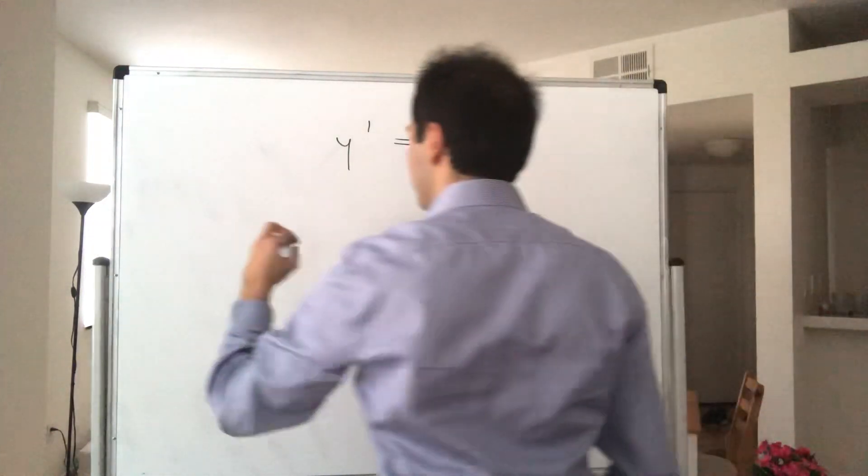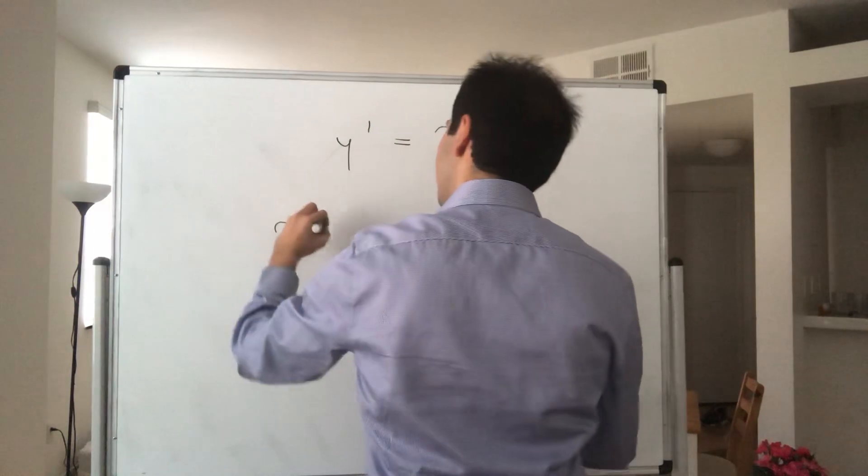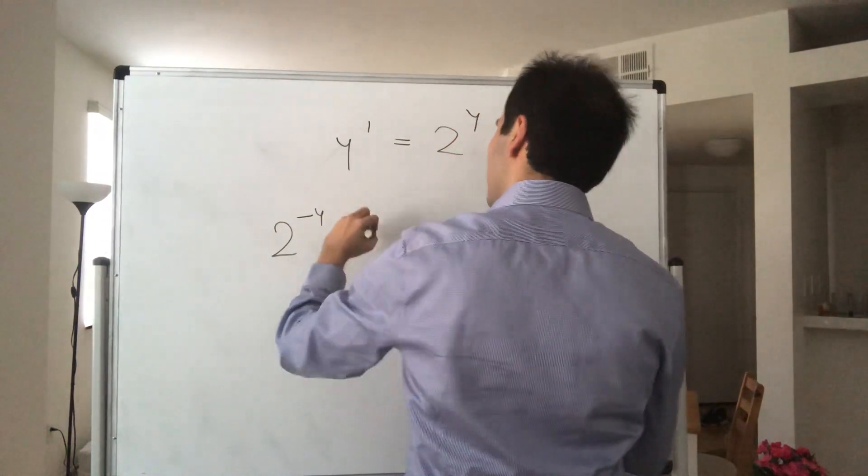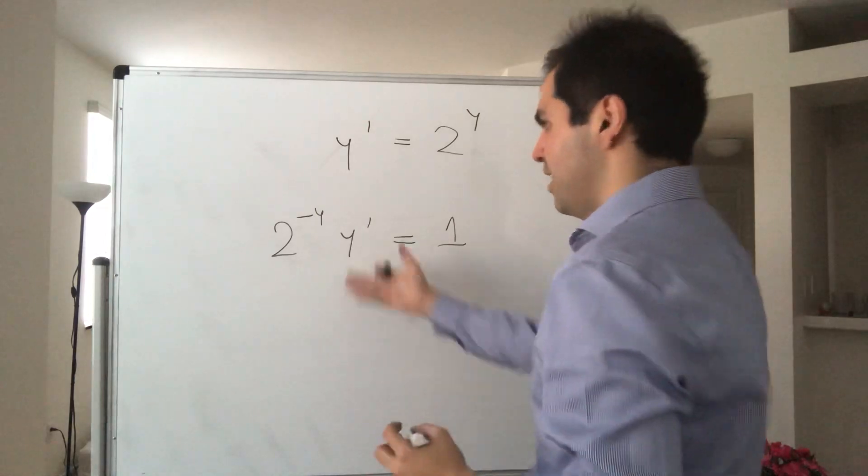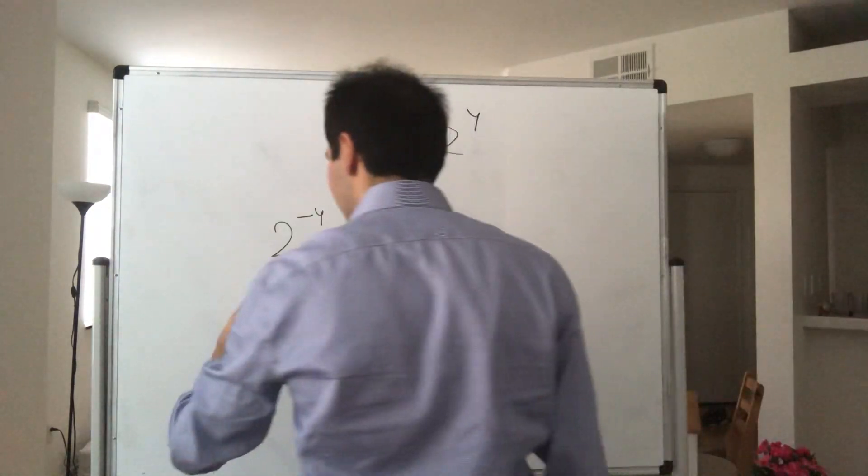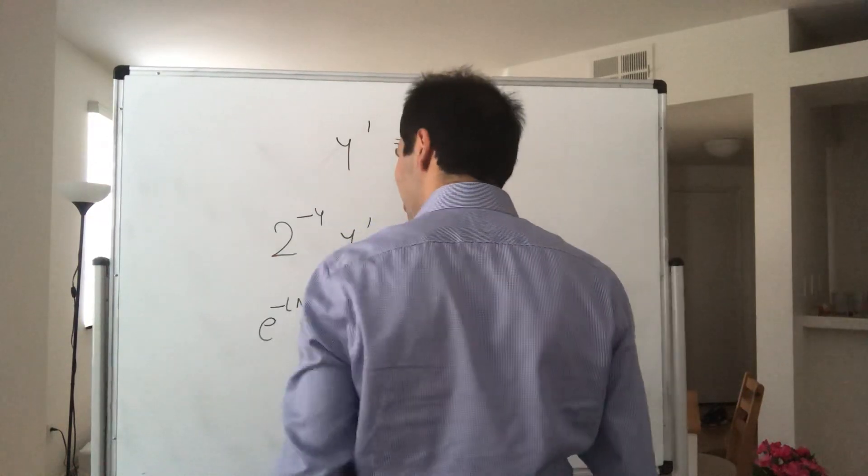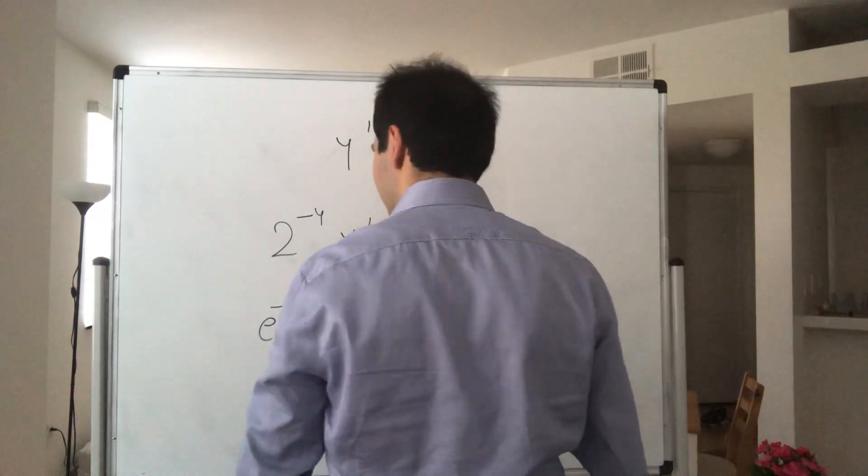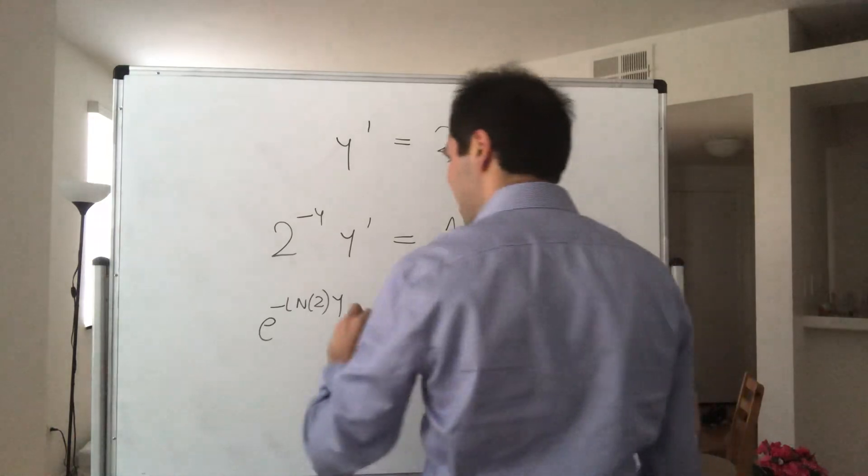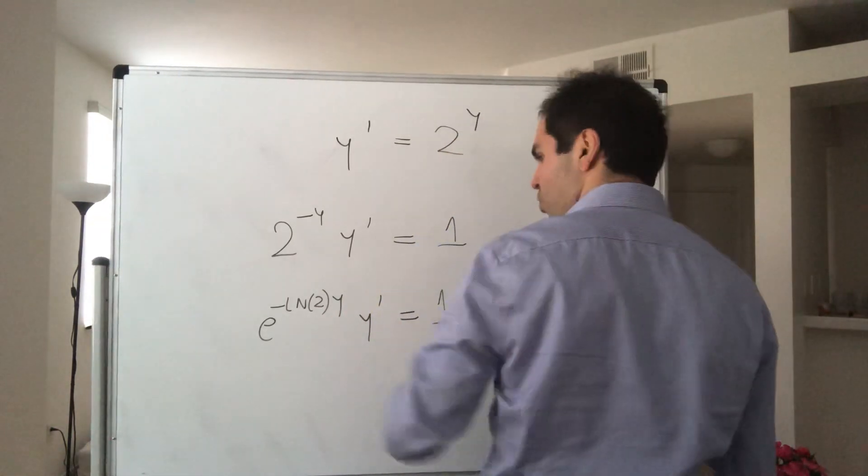Let's put two to the y on one side: two to the minus y, y prime equals one. Let's try to write this as a derivative. I'm not great with powers of two, so let's write it as e to the minus ln of two y, y prime equals one.